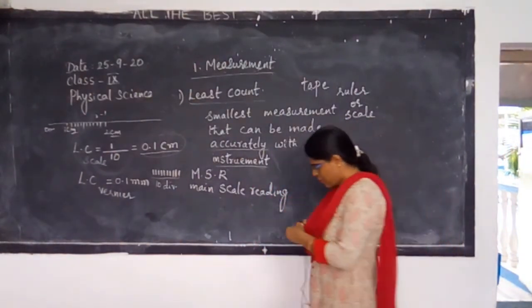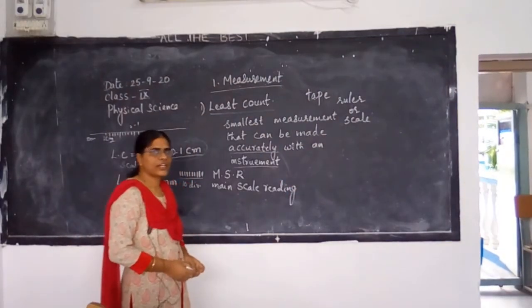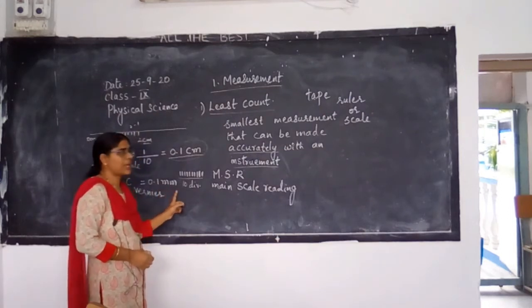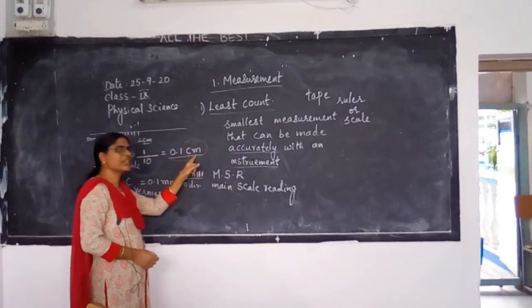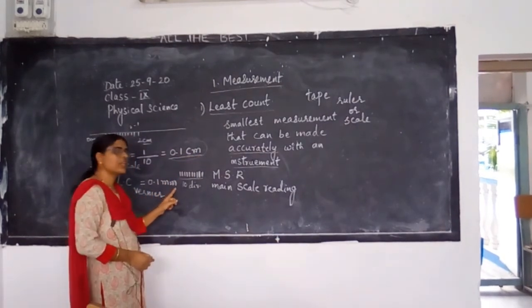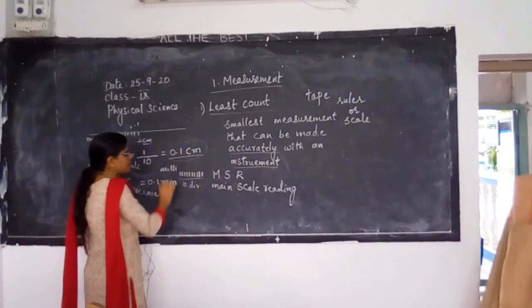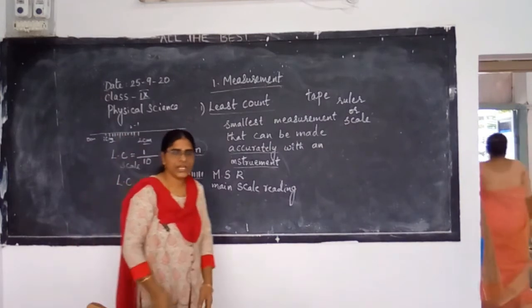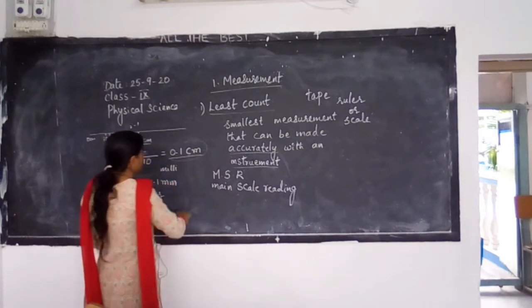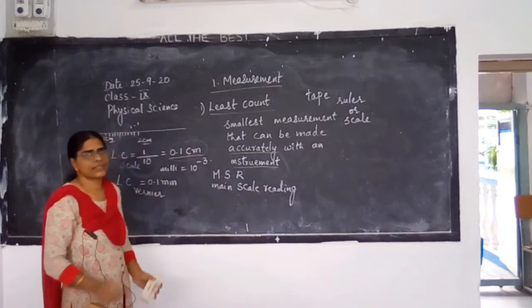The upper scale is called the vernier scale. On the vernier scale there will be only 10 divisions. The main scale reading goes up to 5 cm. There is also a tail on the vernier scale, and you have a knob that you can move.